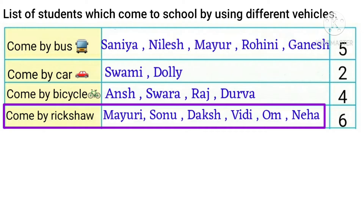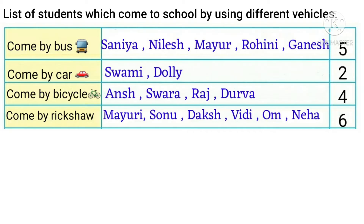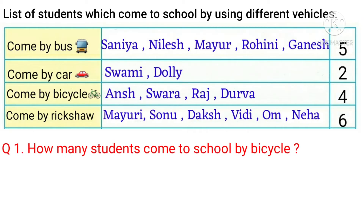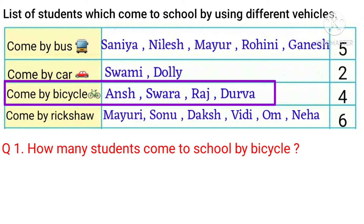Now let's try to answer the given questions based on the above list. Question 1: How many students come to school by bicycle? In this column we can see Ansh, Swara, Raj and Durwa come to school by bicycle. If we count, we can see they are 4.